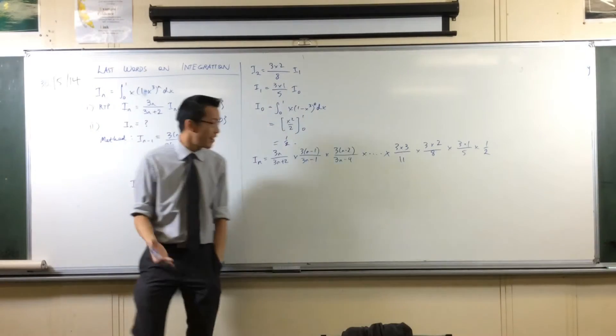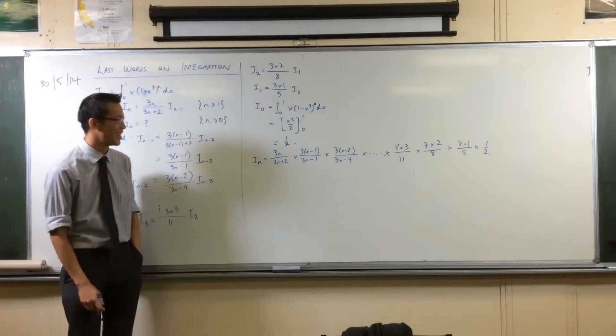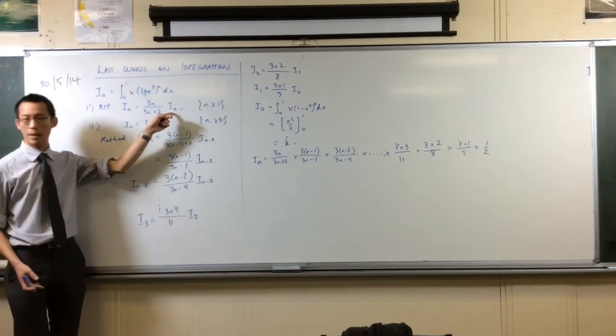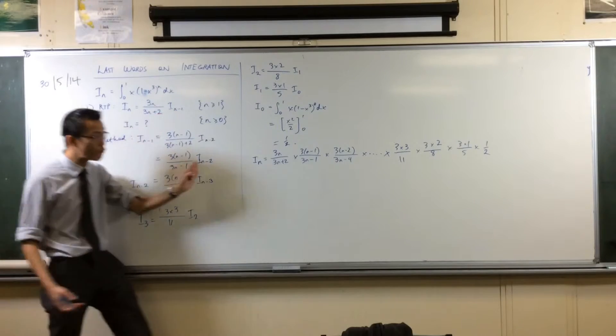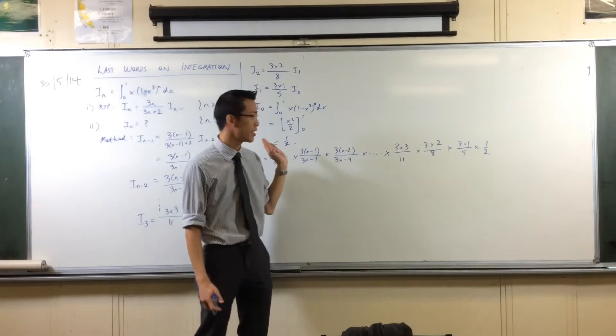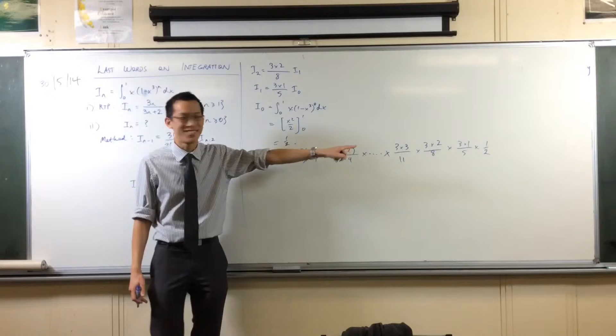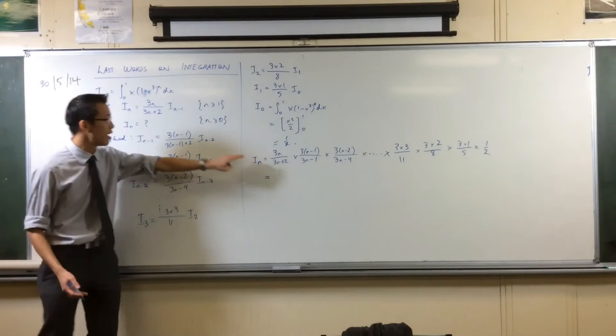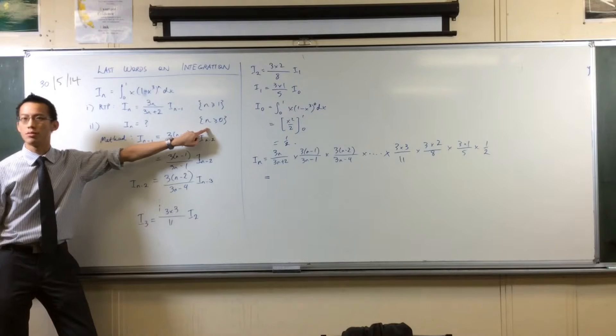Now, admittedly, this looks pretty awful. It looks terrible. However, the strength of this is that it doesn't depend on the recurrence relation anymore. We've gotten rid of all of the recurrence. I've gone down all the way to I_0. So I can actually say that this statement is true even for values of n that include 0.